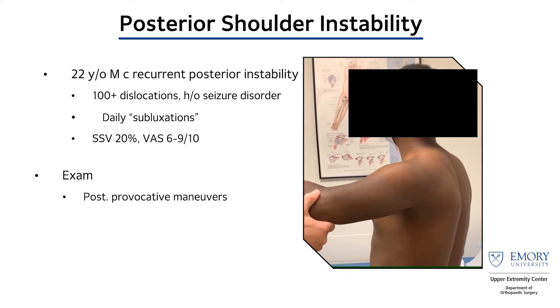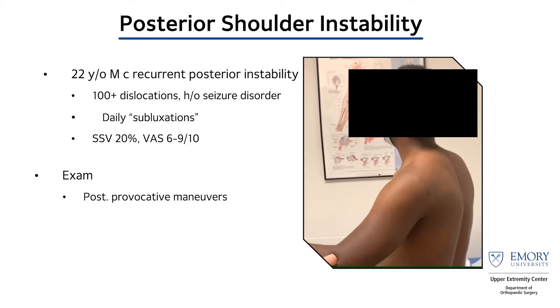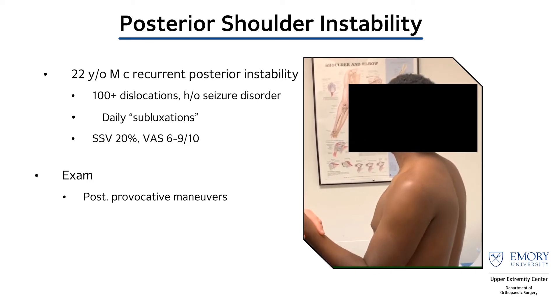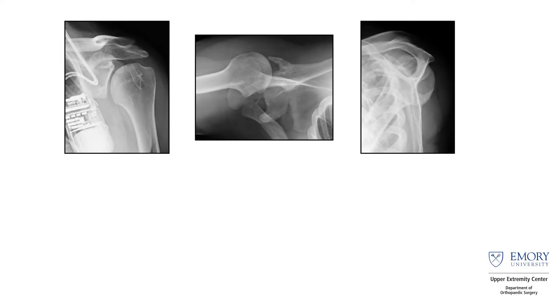His subjective shoulder function is obviously very limited, as you can see in his overall function. On static x-rays — the AP and Grashey views look pretty normal, and the scapular Y also looks pretty normal.